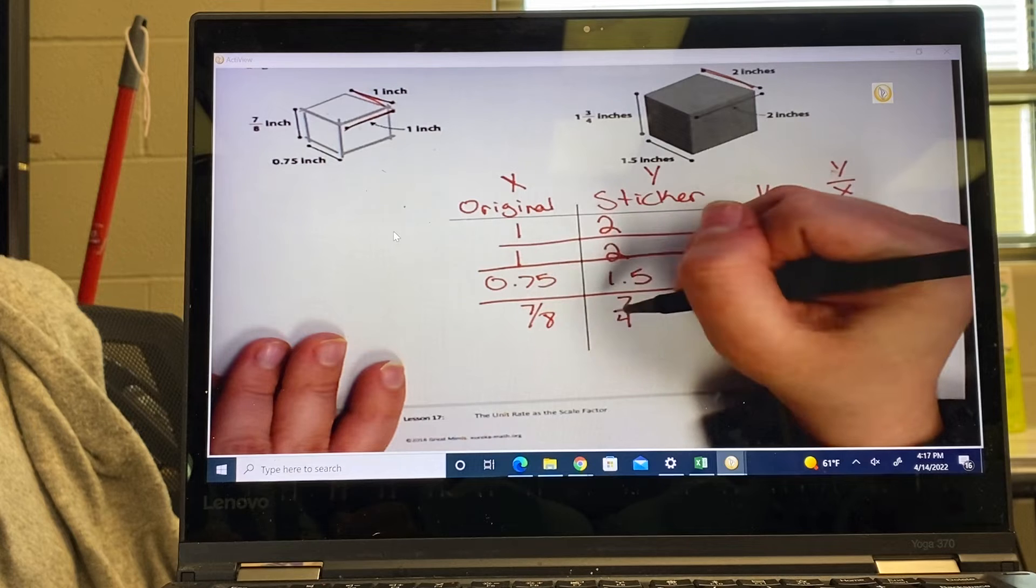So since all four of these divided out to be the same thing, is this proportional? That's a question mark, sorry.